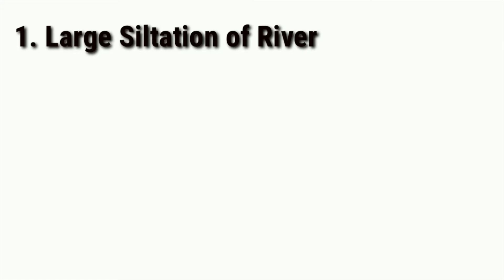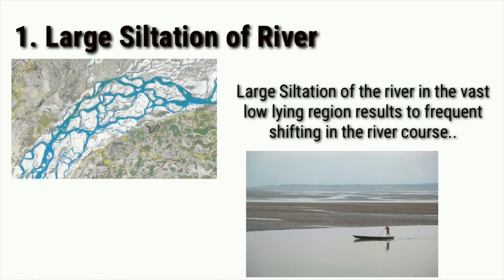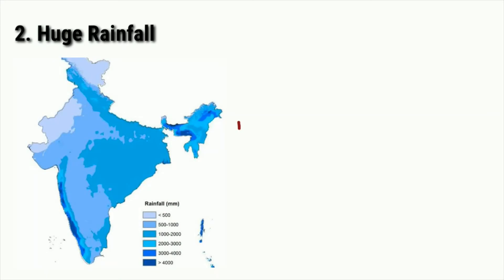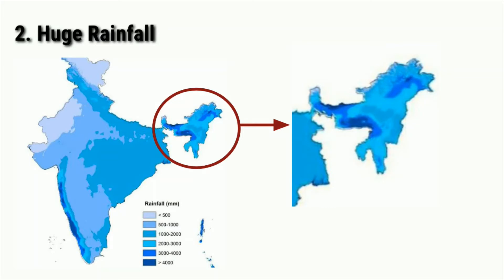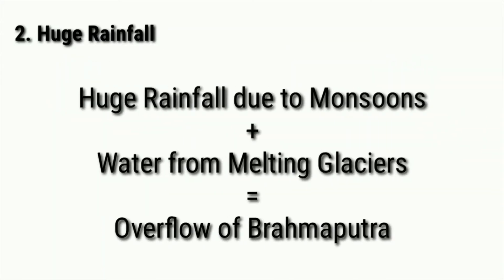The first factor responsible for the annual floods in Assam is the large amount of siltation that the Brahmaputra river deposits in the Assam plains, which ultimately results in frequent changes in its course, making it a braided river. The second factor is rainfall. The areas of northeastern India receive a huge amount of rainfall during the monsoons. As a result, the Brahmaputra receives water both from Himalayan glaciers as well as the heavy rainfall of northeast India, and this coincidence in the monsoon months results in the overflow of the river.